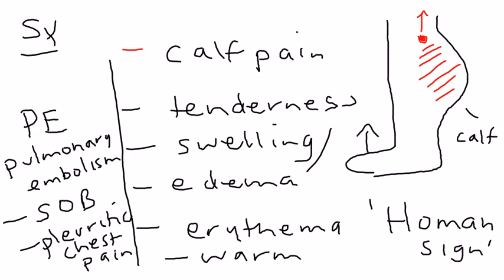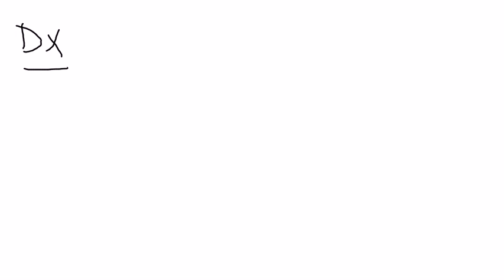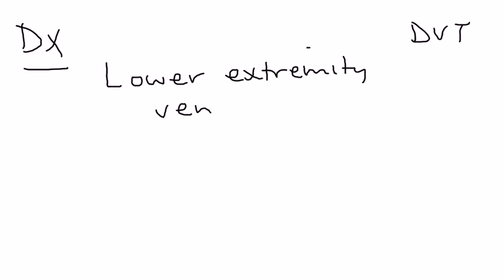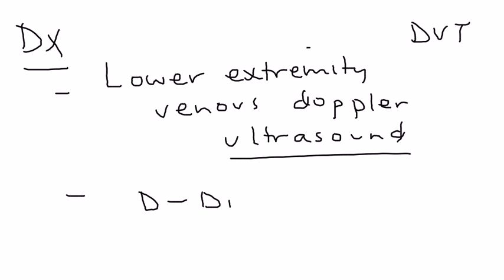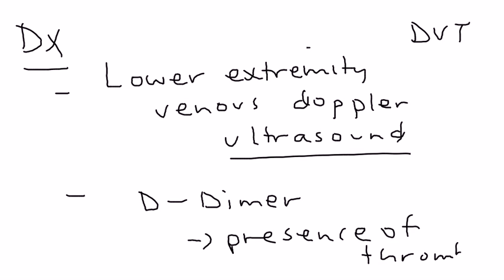To diagnose DVT, the classic test is a lower extremity venous Doppler ultrasound, which will definitively show whether the patient has a blood clot in the legs. Another test that can be done — though it's not very specific — is a D-dimer, which shows the presence of thrombi.